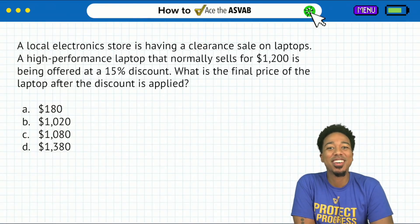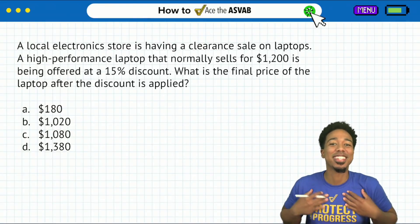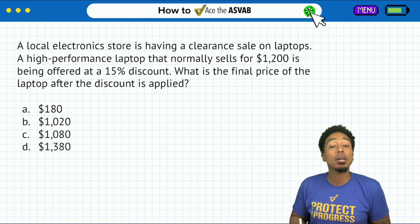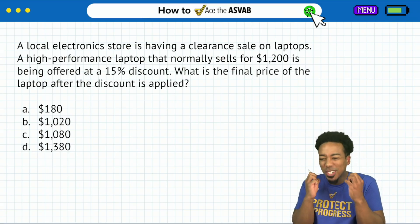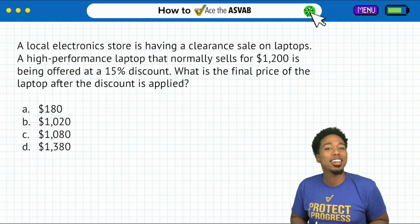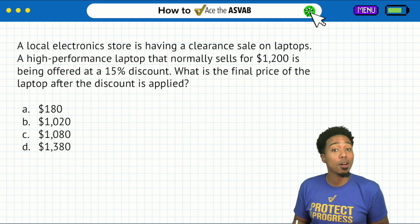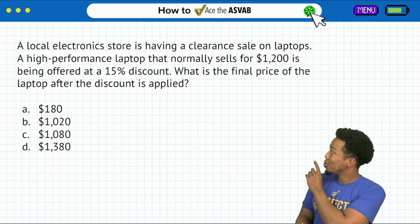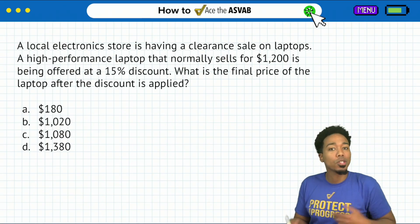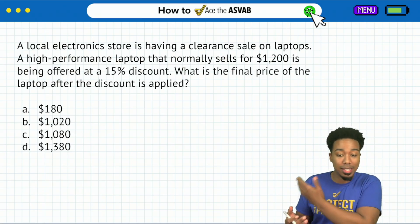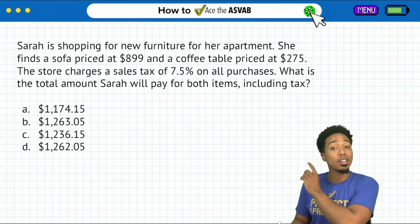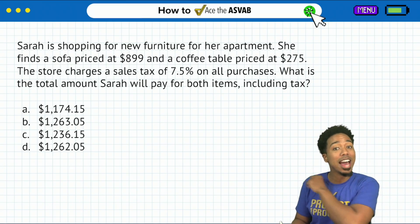What's going on, my ASVAB party people? Coach Anderson here, and I'm excited for this one because I know how much of a headache percent word problems can be. Today we're going to be doing two practice problems — one about a discount and one about a tax.